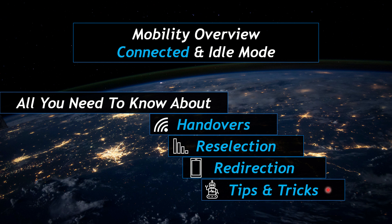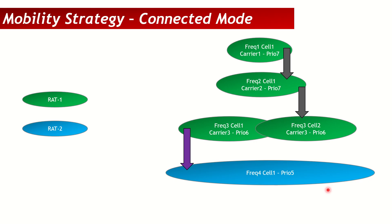In this example, the green cells are from one RAT and the blue one is another RAT. For example, if green is 5G then those are all 5G cells and the blue is an LTE cell, or if you want LTE-to-3G mobility, consider green as LTE and blue as 3G. The mobility strategy idea is similar across technologies, so this example is kept technology-agnostic.